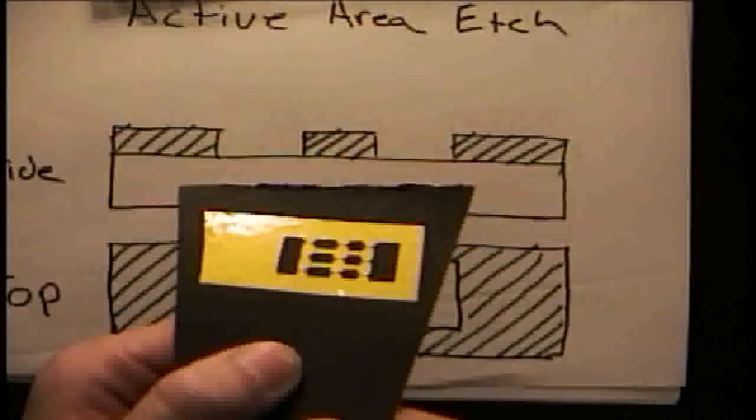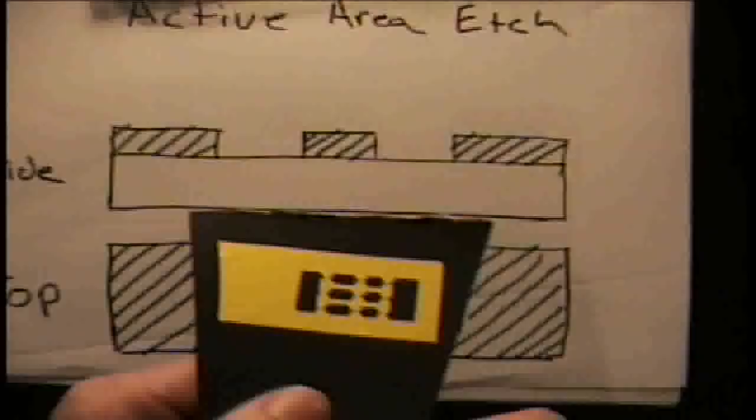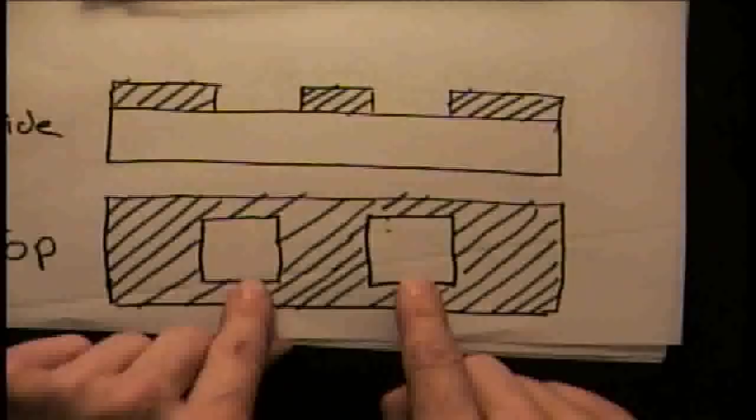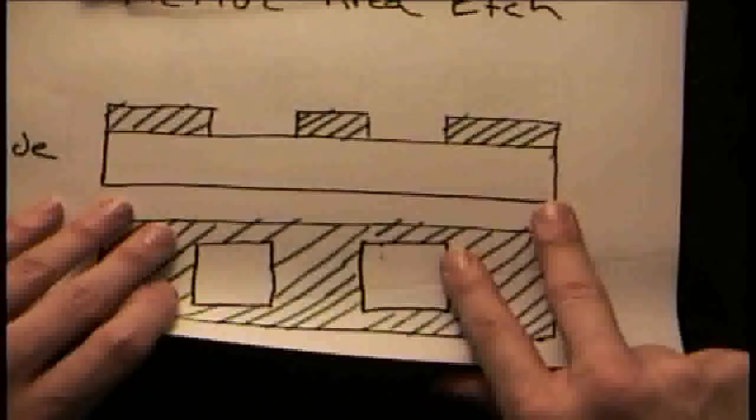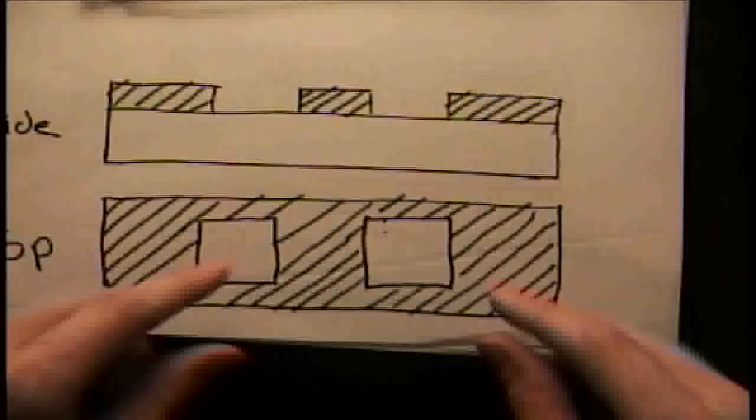It will bead up on the bare silicon whereas it sticks and wets the oxide layers. This is the source and drain region, the active area. We're going to cut two squares and try to get in as close as we can to make a channel.